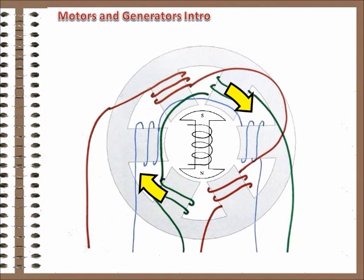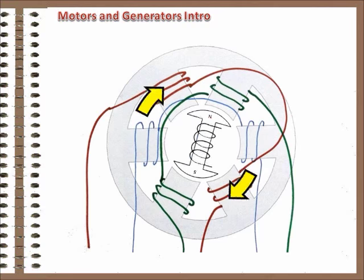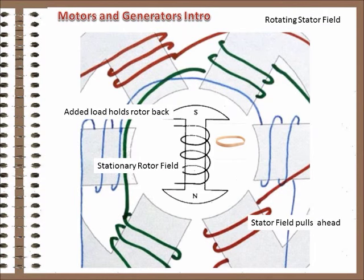If a load is applied to the rotor shaft, the rotor will momentarily fall behind the rotating field, but will continue to rotate at the same synchronous speed, which is where these motors get their name. The falling behind is like the rotor being tied to the rotating field with rubber bands.